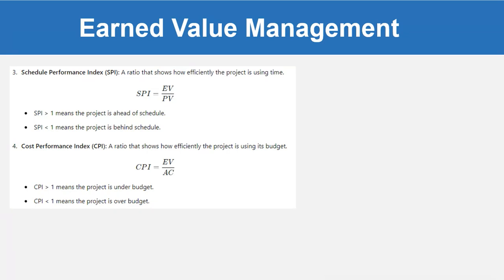Schedule Performance Index (SPI) is a ratio that shows how efficiently the project is using time. SPI = EV divided by PV. SPI greater than 1 means the project is ahead of schedule; SPI less than 1 means the project is behind schedule. Cost Performance Index (CPI) is a ratio that shows how efficiently the project is using its budget. CPI = EV divided by AC. CPI greater than 1 means the project is under budget; CPI less than 1 means the project is over budget.